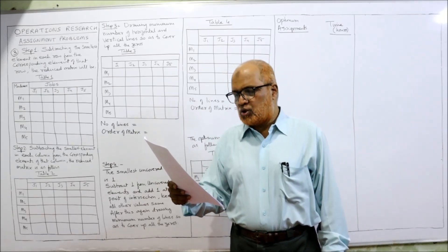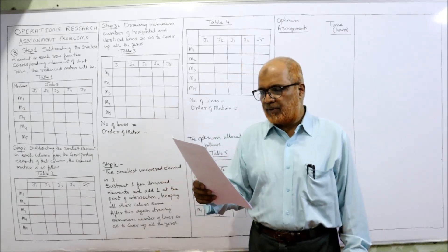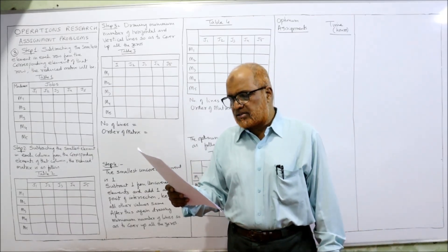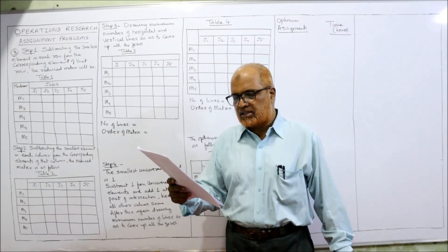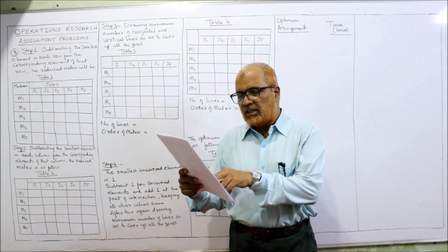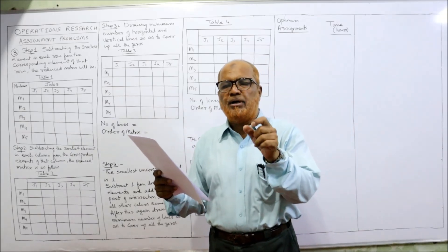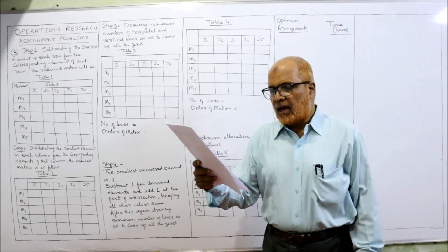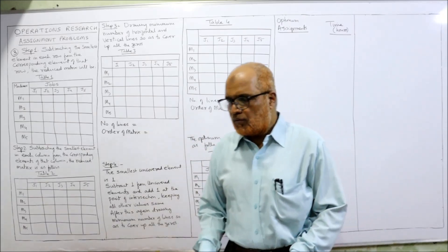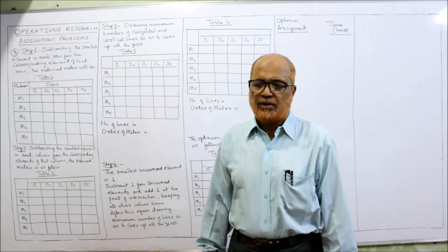A certain equipment needs five repair jobs which have to be assigned to five machines. It's a square matrix — number of rows and number of columns are equal: five machines and five jobs, meaning one machine should be given one job. The table gives the estimated time in hours each mechanic requires to complete each repair job. We have to find out which machine should be given which job, so we'll apply the Hungarian method.